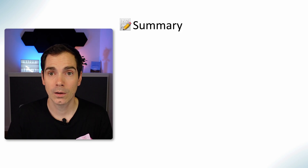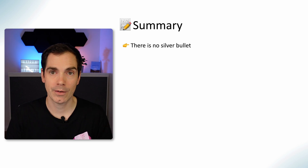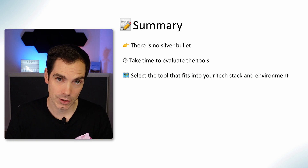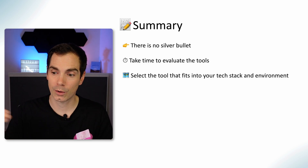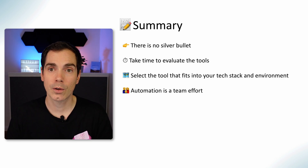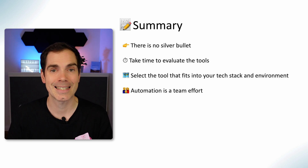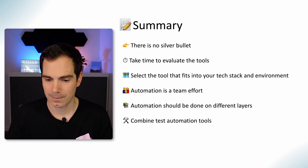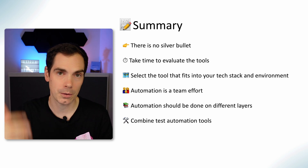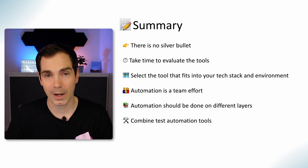Let's sum up. There is no silver bullet in tools — every tool has its pros and cons. Take the time to evaluate different tools and select the one that fits perfectly into your current environment and tech stack. Automation is a team effort — if you're the only one focusing on automation, try to put it on more shoulders and get support from developers and testers. Also, automate on different layers: don't just blindly automate on the UI level; look at the back end and API level too.